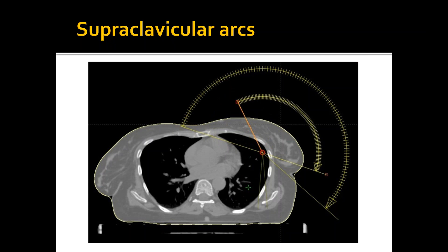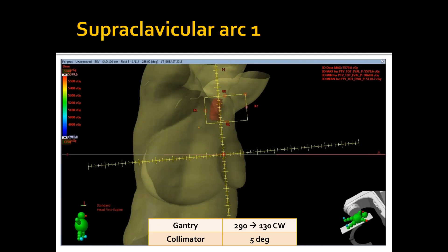For the supraclav, I used two partial arcs as well. This is the first arc extends from 290 to 130 clockwise with a little bit of a collimator angle. And this is just to give the optimizer some flexibility at the edges of the target. And this is the second arc from 119 to 330.